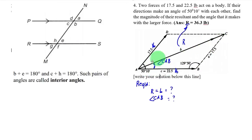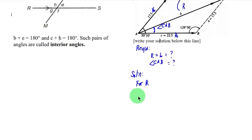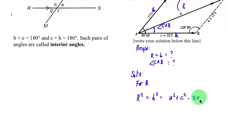We form an oblique triangle with sides 22.5 and 17.5 pounds and the included angle of 129 degrees 50 minutes. This is again case 4, so we solve first for the resultant using the Law of Cosines: r squared equals a squared plus c squared minus 2ac cosine of 129 degrees 50 minutes.